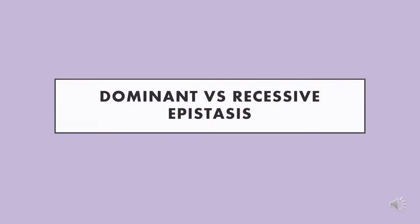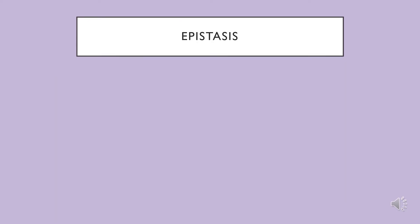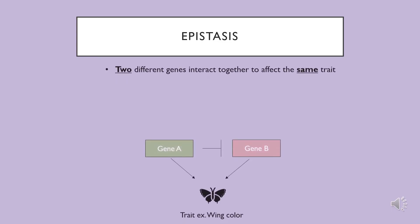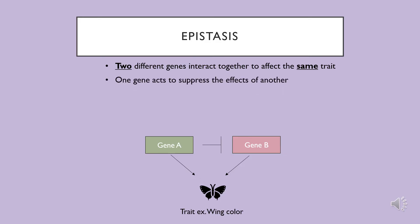Welcome and thanks for watching. In this video we will be exploring the differences between dominant and recessive epistasis. The phenomenon of epistasis describes scenarios in which two different genes interact together to affect the same trait, and specifically one gene acts to suppress the effects of another.